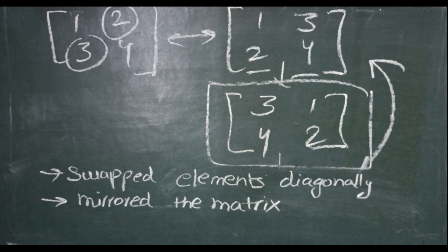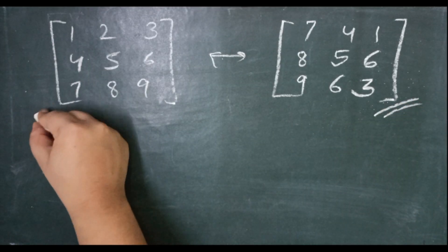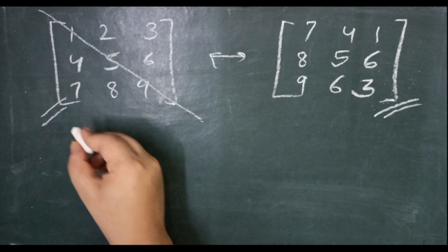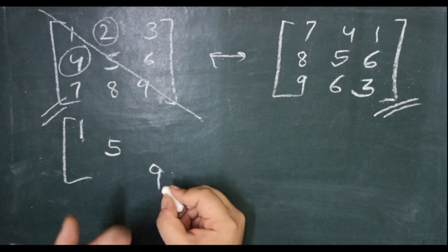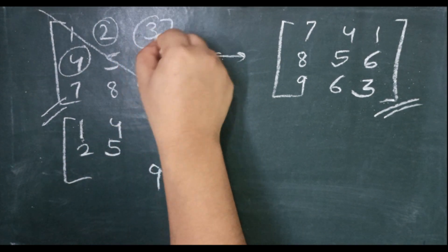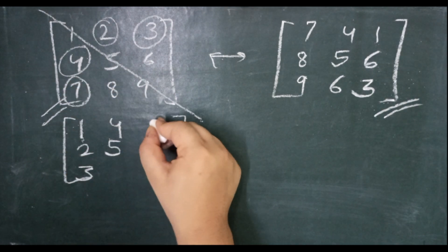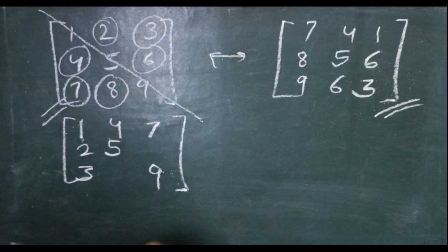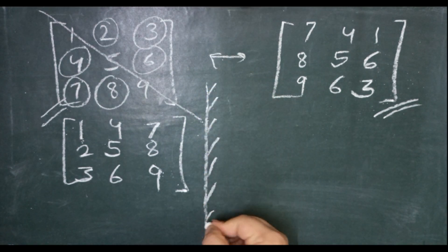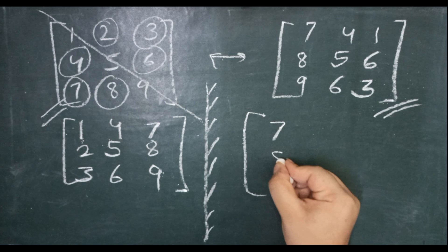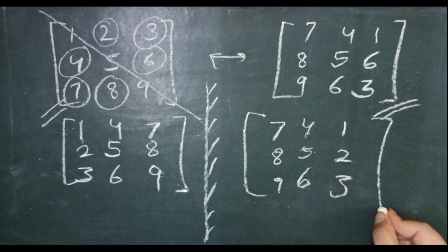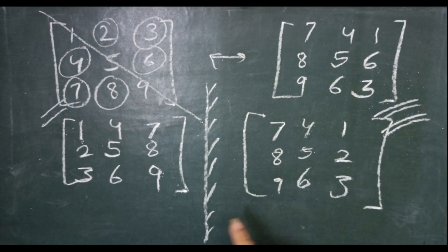Let's see if this works in other examples also. We have to get this matrix from this matrix. So firstly we have to swap the elements diagonally: 1, 5, 9 are the diagonal elements so they will remain the same. 2 with 4, so it is 2 here, it is 4. We will change 3 with 7, so it is 3 here, it is 7, and we will change 8 with 6, so it is 6, it is 8. Now we have to mirror our matrix, so we are mirroring our matrix. It will become [7, 8, 9; 4, 5, 6; 1, 2, 3] and we got our answer.